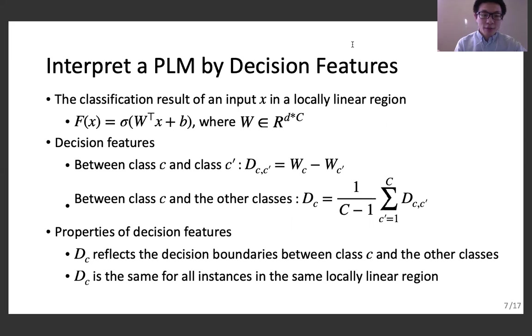Let's first define the concept of decision features. Recall that in a locally linear region, an input is classified by a linear classifier whose parameters are w and b. W is a d-by-c matrix where d is the input dimension and c is the number of predicted classes. Wc is the c's column of w, which is the vector of weights for features in predicting the input as class c. The decision features between class c and c' is defined as the difference between their corresponding columns in w. We denote it by d_cc'.